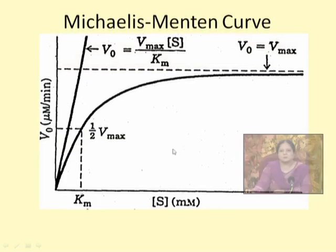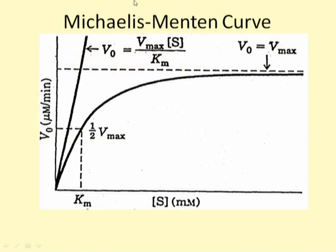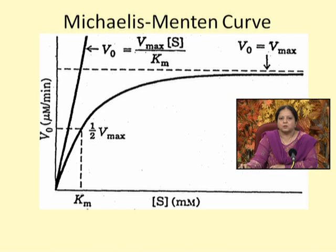This equation explains the substrate saturation curve, also known as the Michaelis-Menten plot. Looking closely at this plot, initial velocity V0 is on the y-axis and molar substrate concentration is on the x-axis. A Michaelis-Menten type enzyme always shows a rectangular hyperbola, where initially the velocity increases linearly with substrate concentration, then gradually tapers off and finally reaches a plateau.